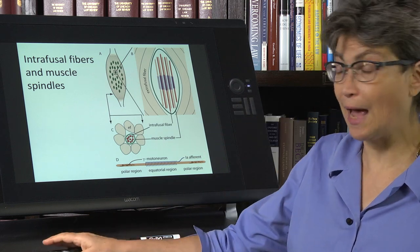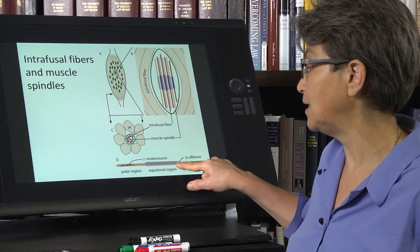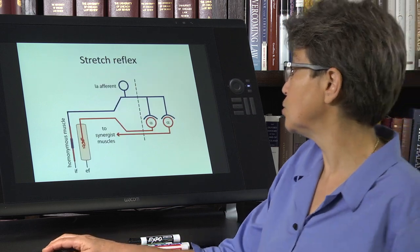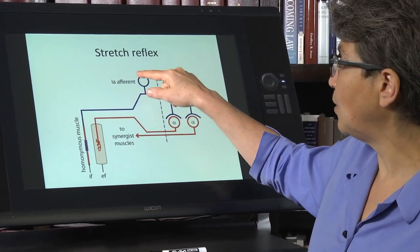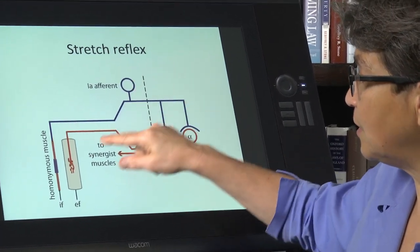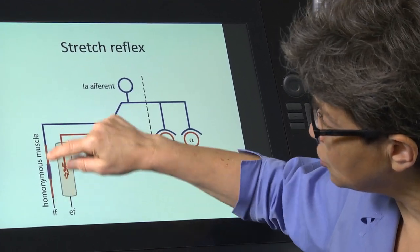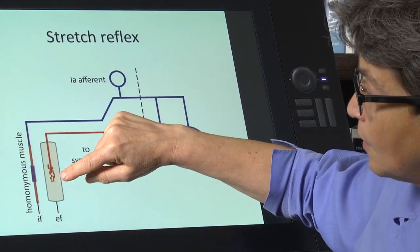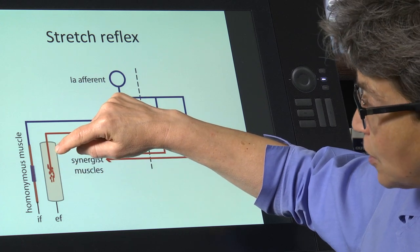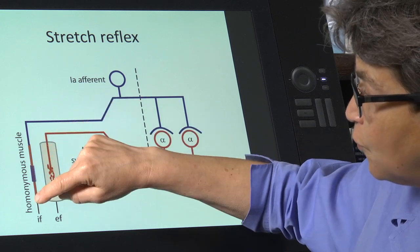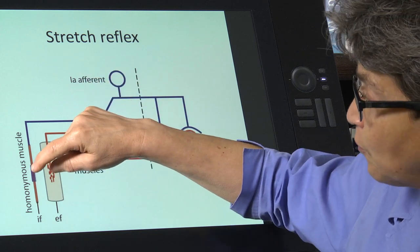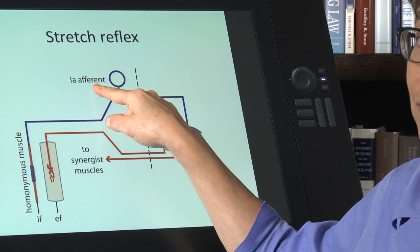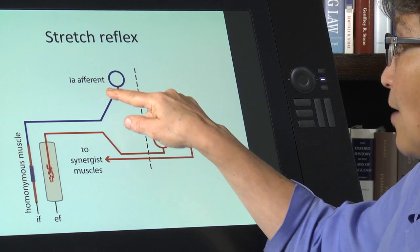What happens if this equatorial region is stretched? That's the stretch reflex. Here we have this afferent that is wrapped around this intrafusal fiber that sits inside of a muscle where there are extrafusal fibers and then these intrafusal fibers within the muscle spindles. And wrapped around the equatorial region is this special afferent called the 1A afferent.